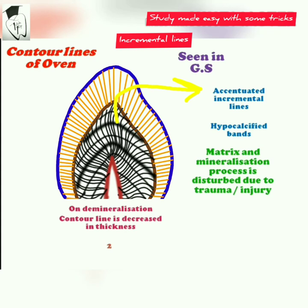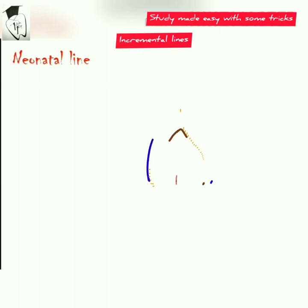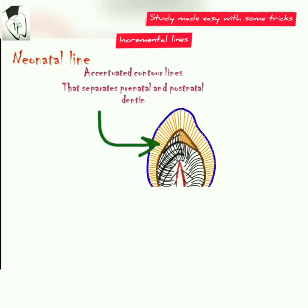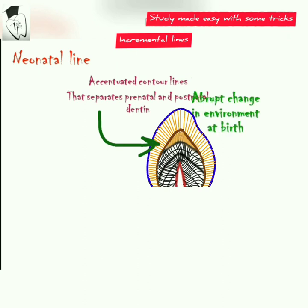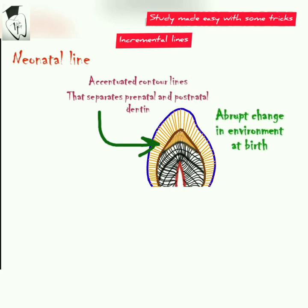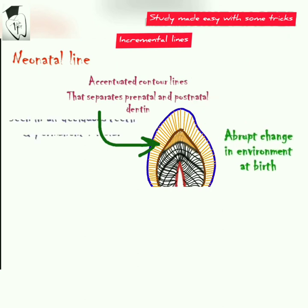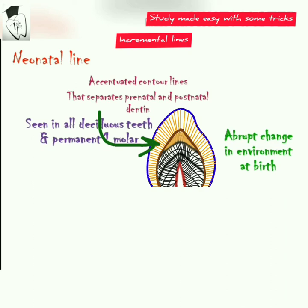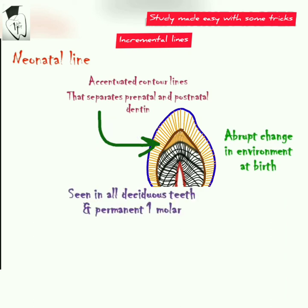To differentiate between these, there is an experiment: on demineralization, the contour lines of Owen will decrease in thickness, but secondary curvatures will persist. The neonatal line of dentine is an accentuated contour line that separates prenatal and postnatal dentine due to the abrupt change in environment at birth. It is seen in deciduous teeth and permanent first molars, and the area is a zone of hypocalcification.